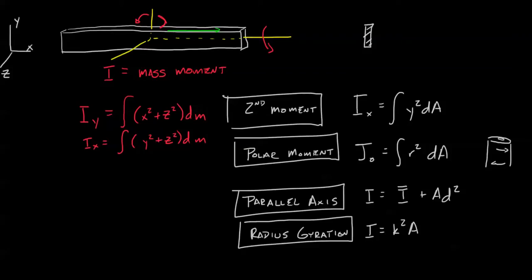With the polar moment of mass moment of inertia, we're going to take that same cylinder, and instead of trying to twist it, we're going to spin it. How strongly does it resist spinning?